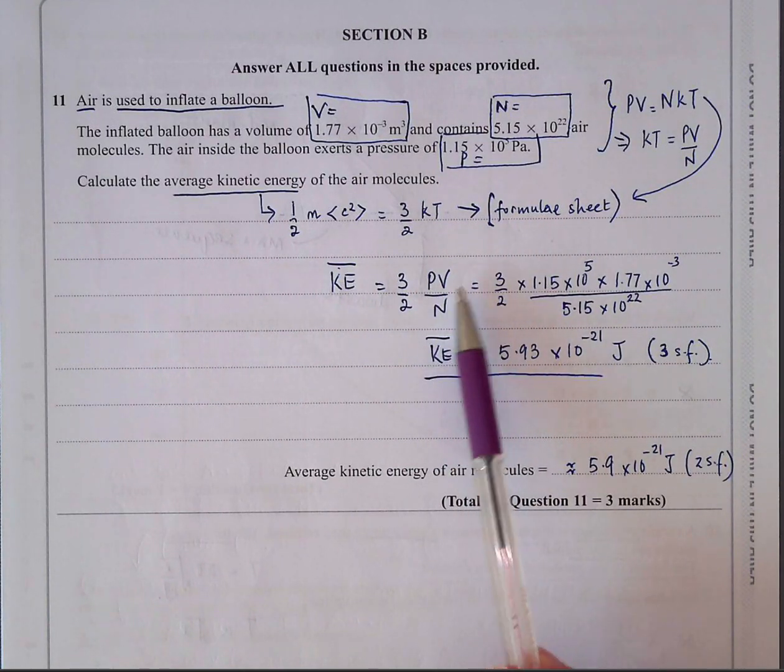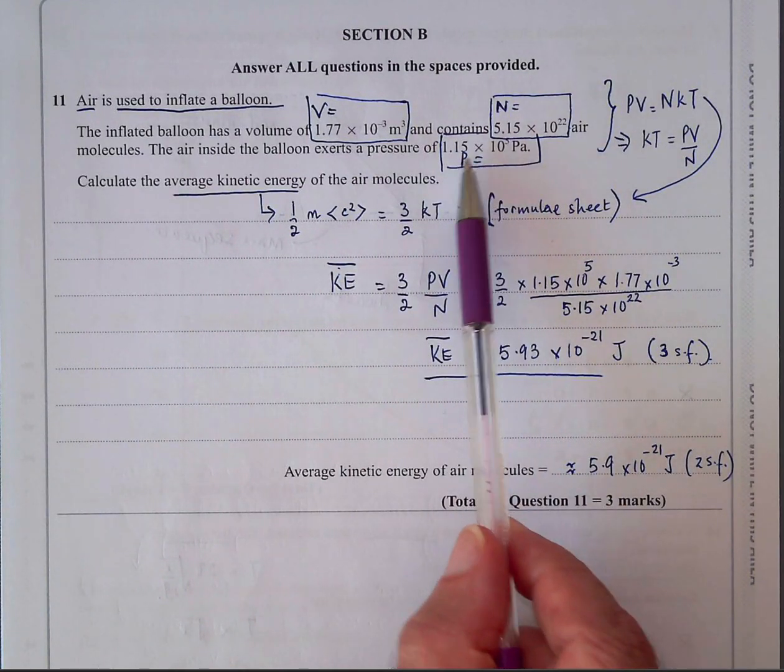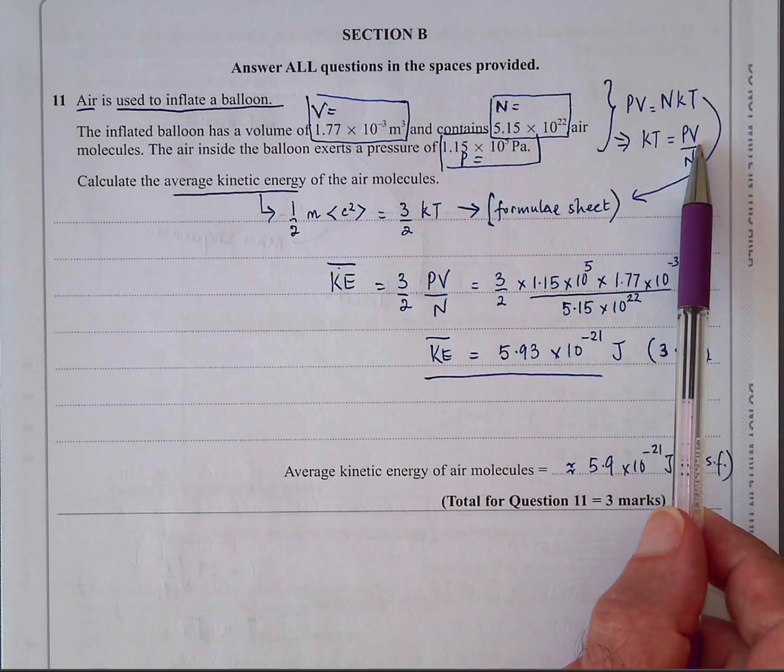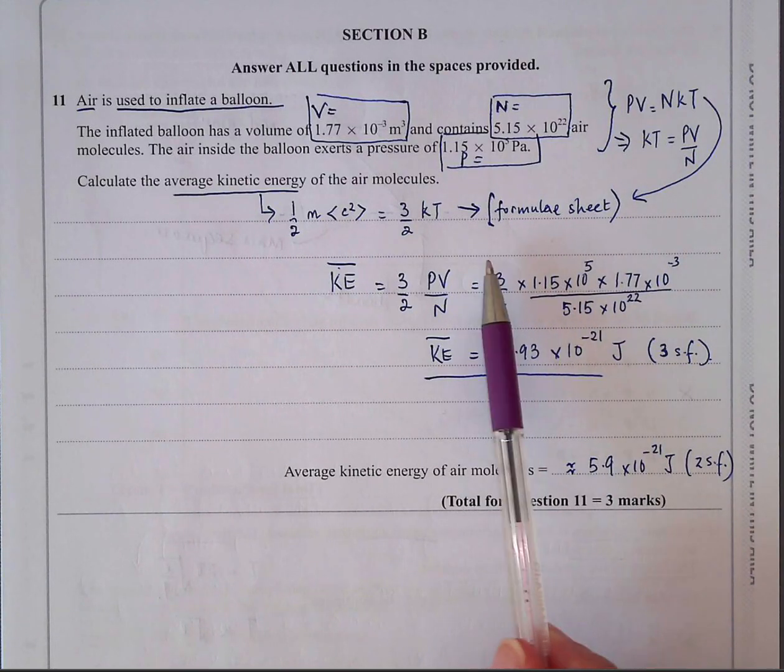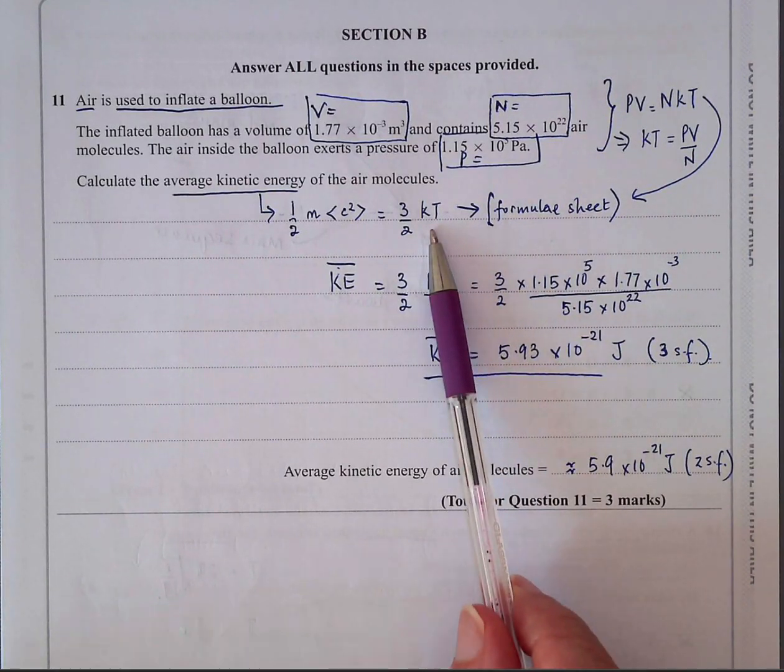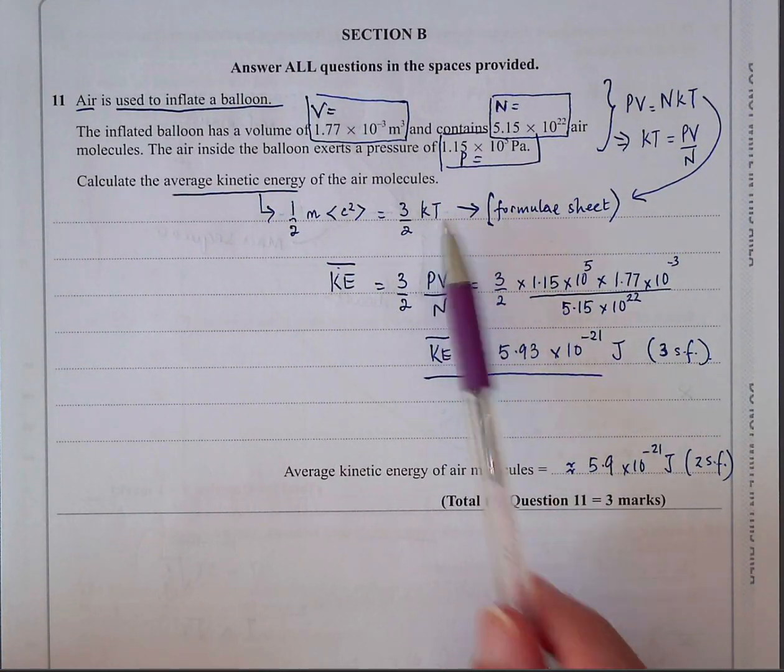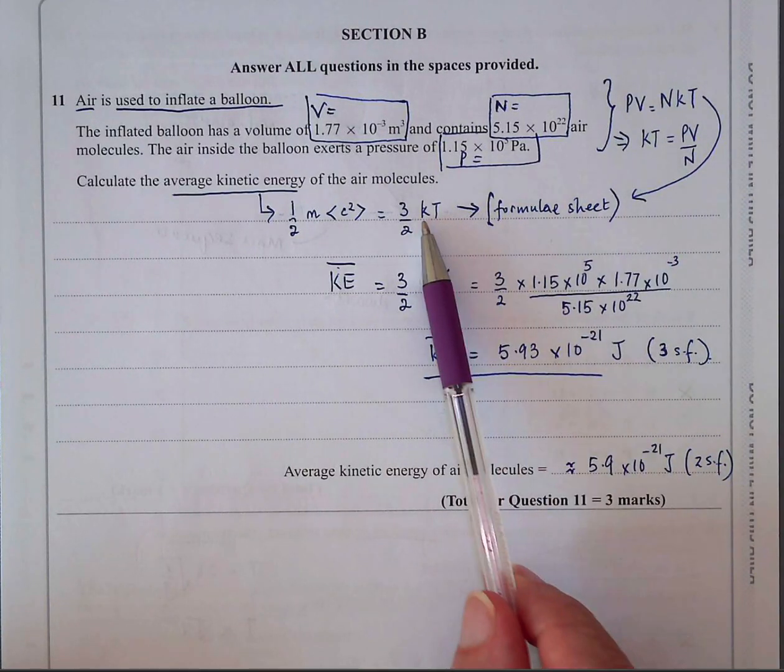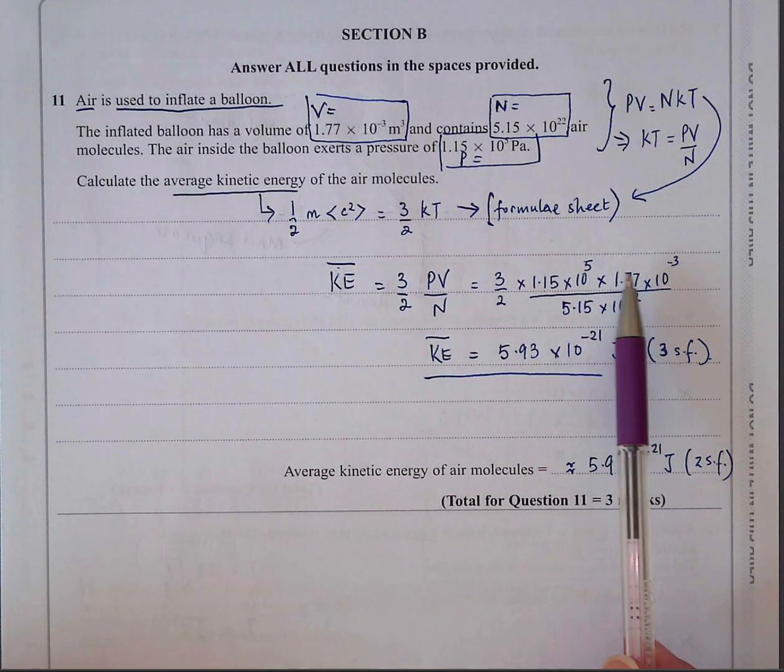We know PV and N. We've been given, obviously K, we know. We haven't been given T, so you can replace KT with PV and N. So that means you don't have to, it makes it a quicker calculation than rather multiplying, working out what T is and then putting K in. So that reduces one bit of data entry.